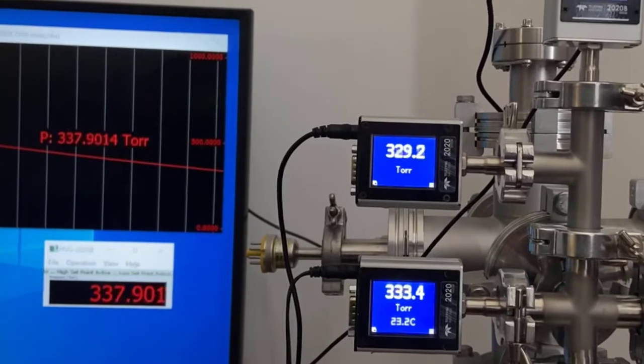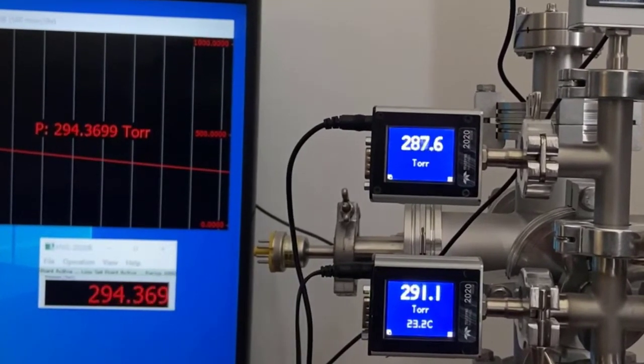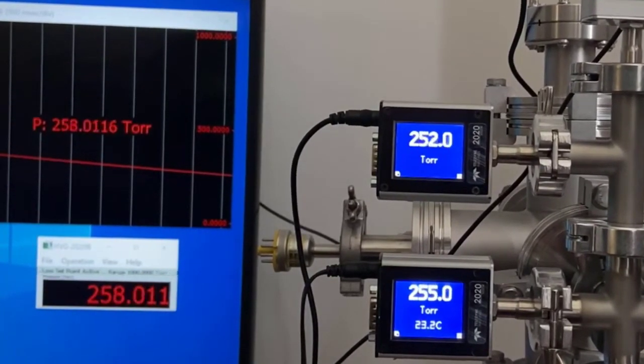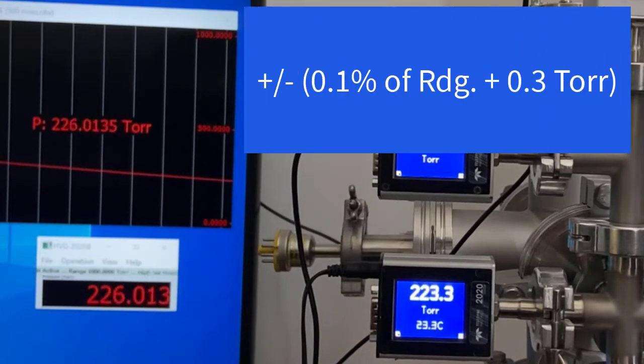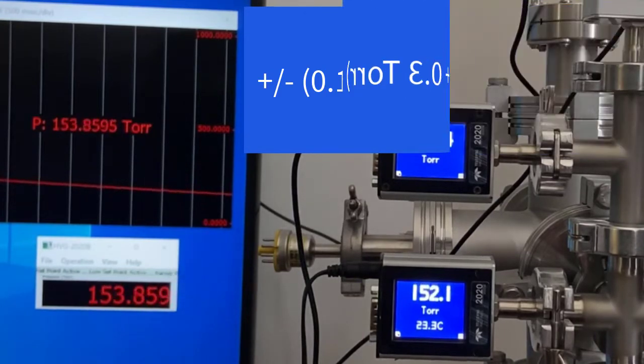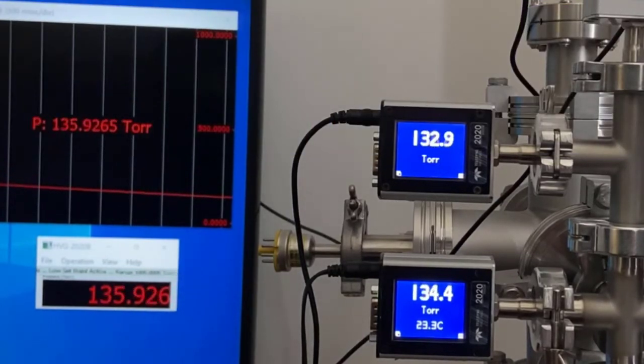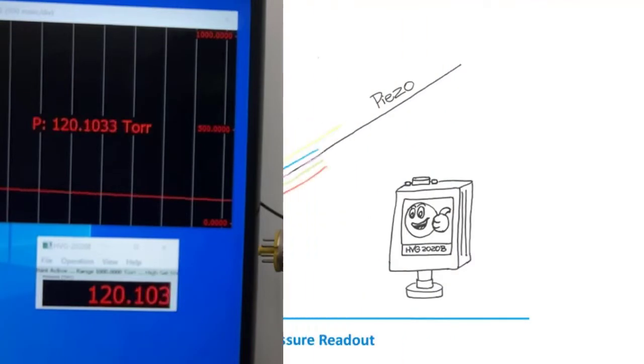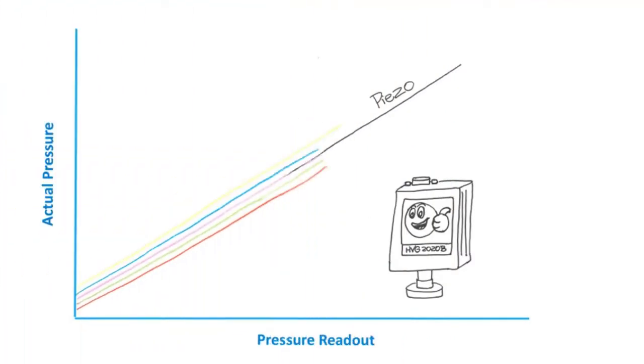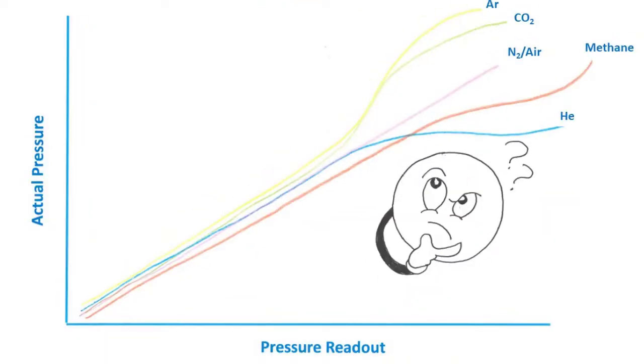Now, the piezo sensor allows us to do a couple of things. First, this sensor is very accurate. The accuracy above 20 torr is plus or minus 0.1% of reading plus 0.3 torr. But equally important is the fact that the piezo sensor's output for a given true pressure is not affected by the composition of the gas. Note that convection-driven Pirani gauges are strongly dependent on gas composition as the pressure is increased towards atmosphere.